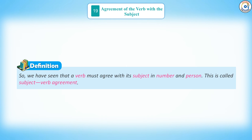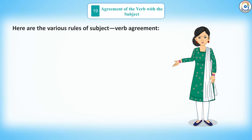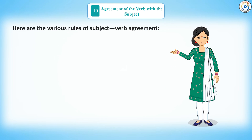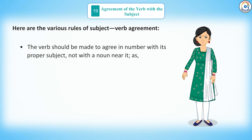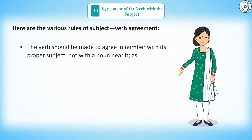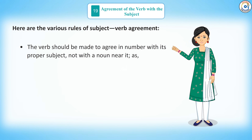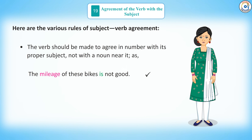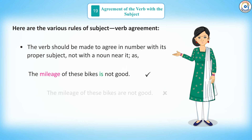Definition: a verb must agree with its subject in number and person. This is called Subject-Verb Agreement. Here are the various rules. Rule 1: the verb should agree in number with its proper subject, not with a noun near it — as in, the mileage of these bikes is not good.